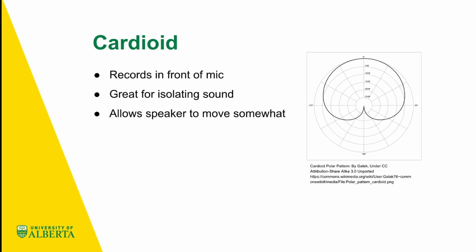The most popular polar pattern is probably the cardioid polar pattern. It covers a fair bit in front of the microphone at zero degrees, but doesn't do much behind it — creating this almost heart pattern, hence the name cardioid. This is really good because it records in front of the microphone and isolates sound mostly to that. The main sound it picks up is from in front of the microphone and a little to the sides, but not so much behind. Cardioid is super popular and allows speakers to move somewhat.